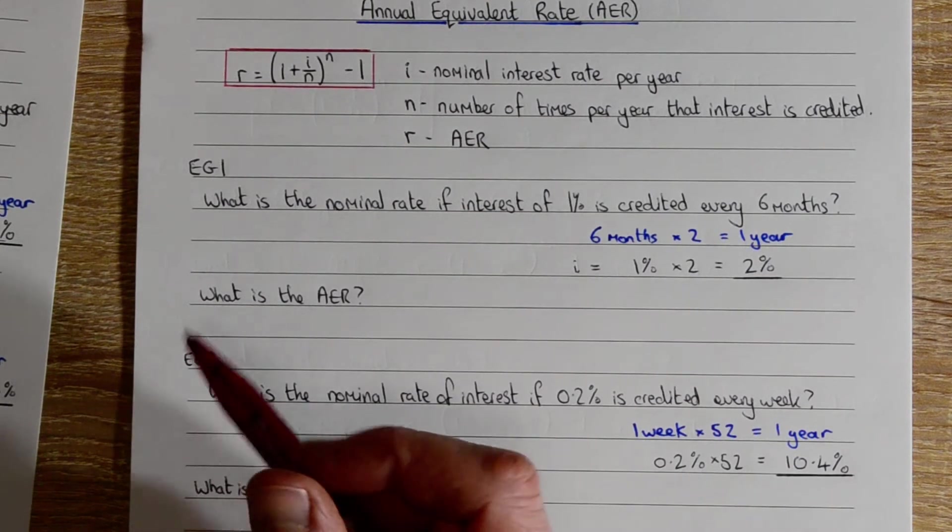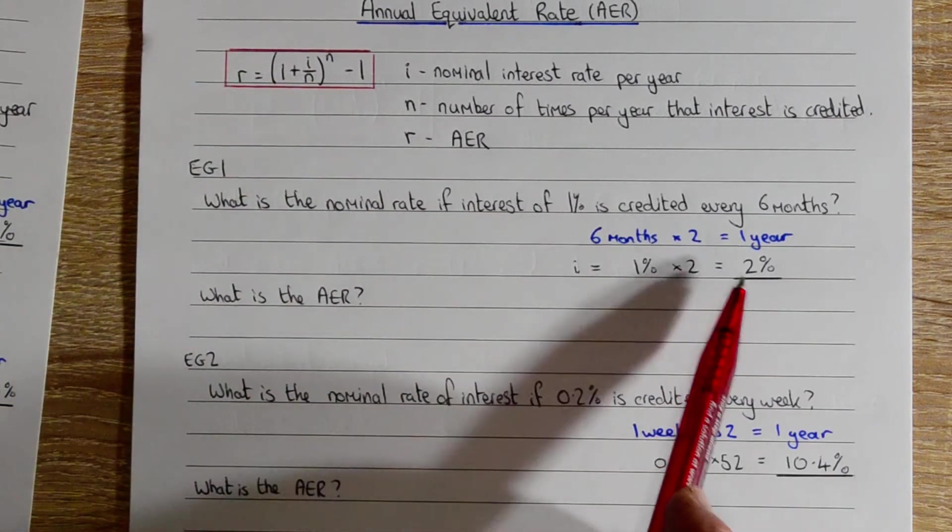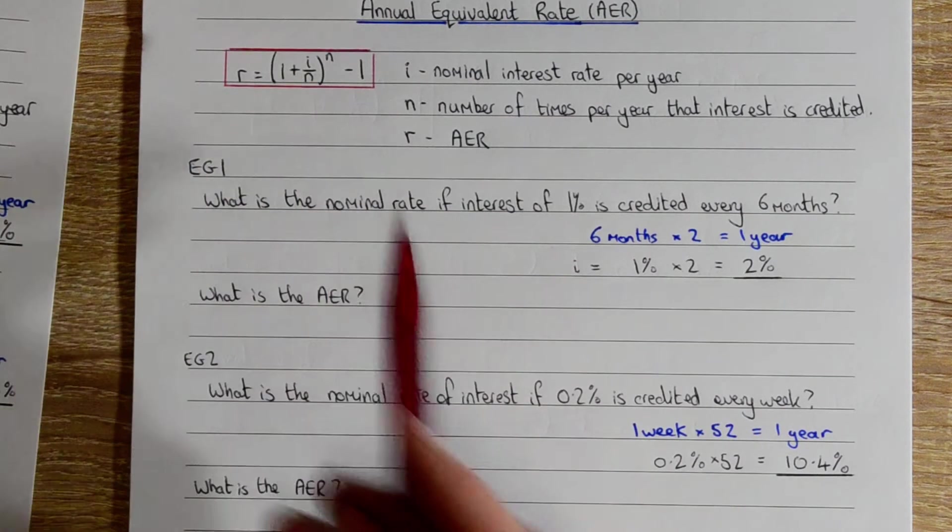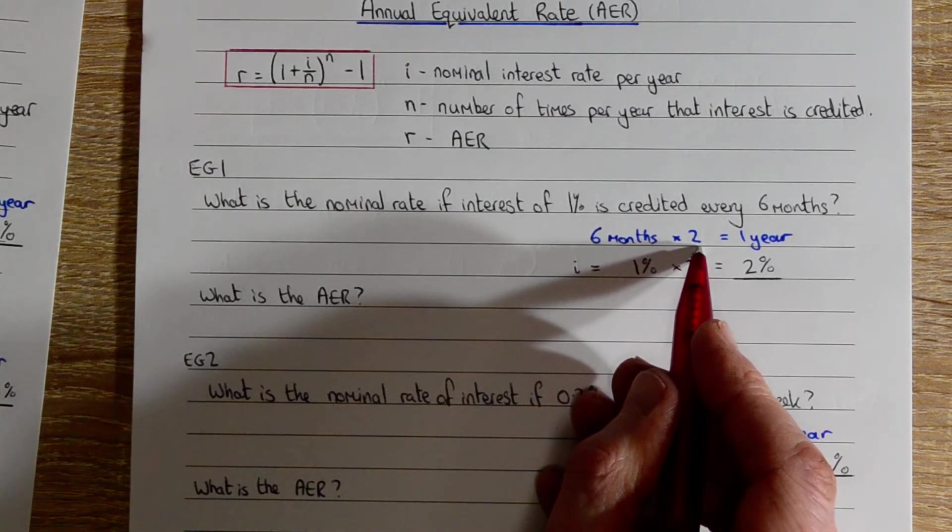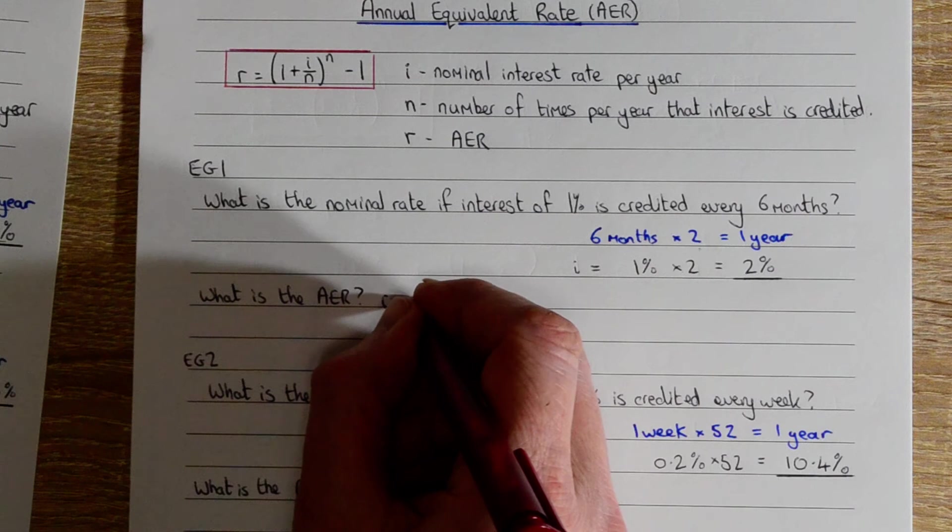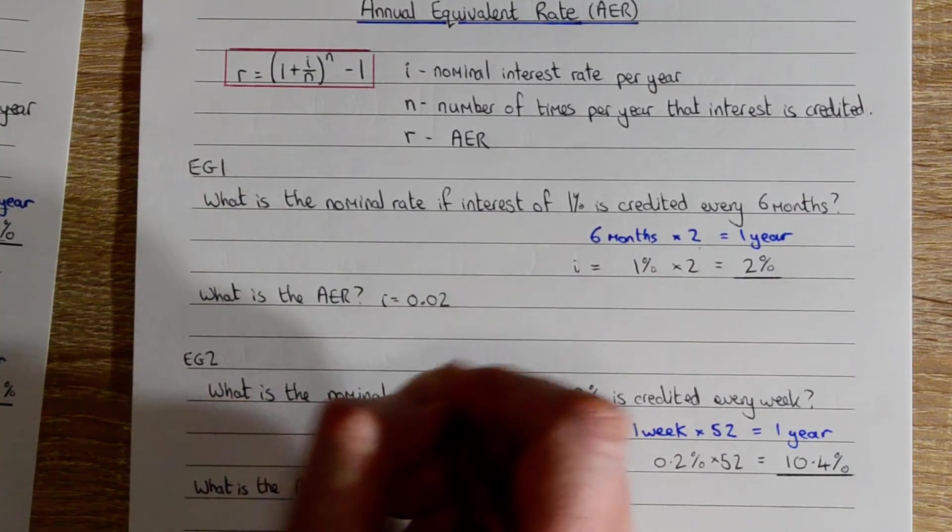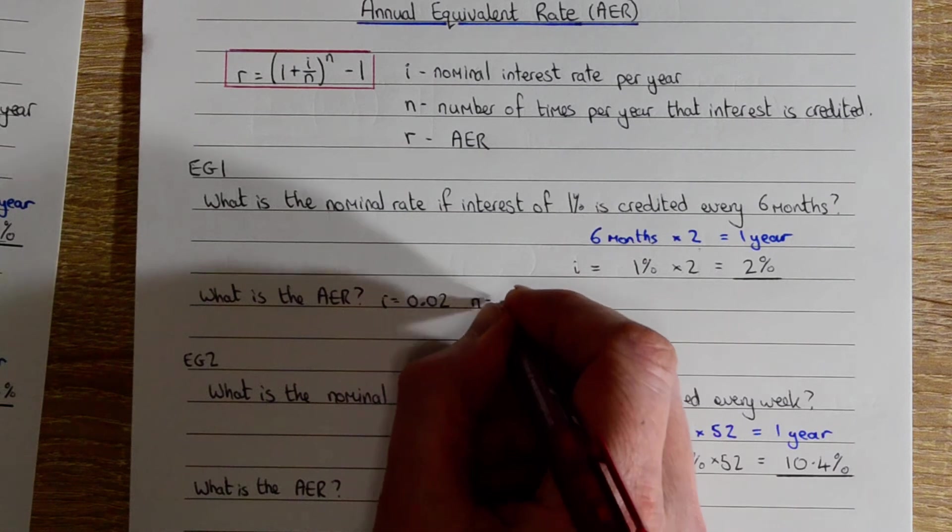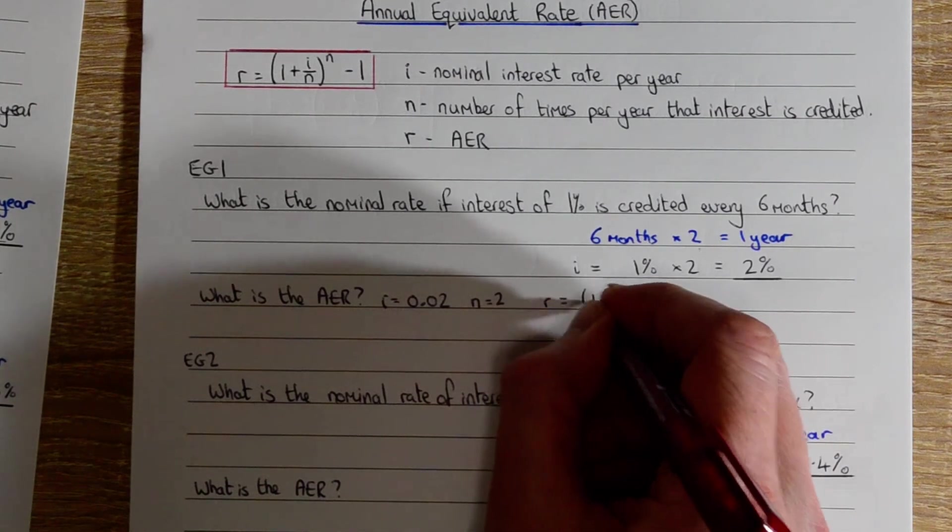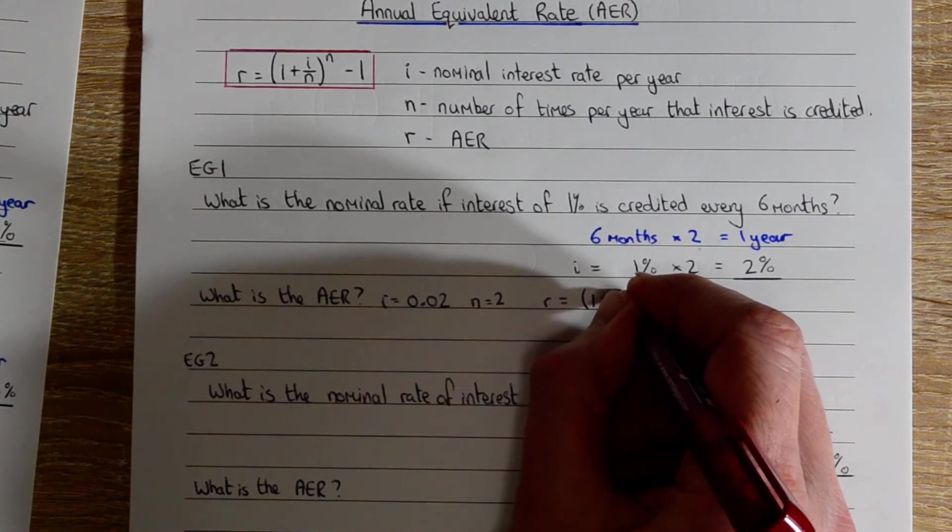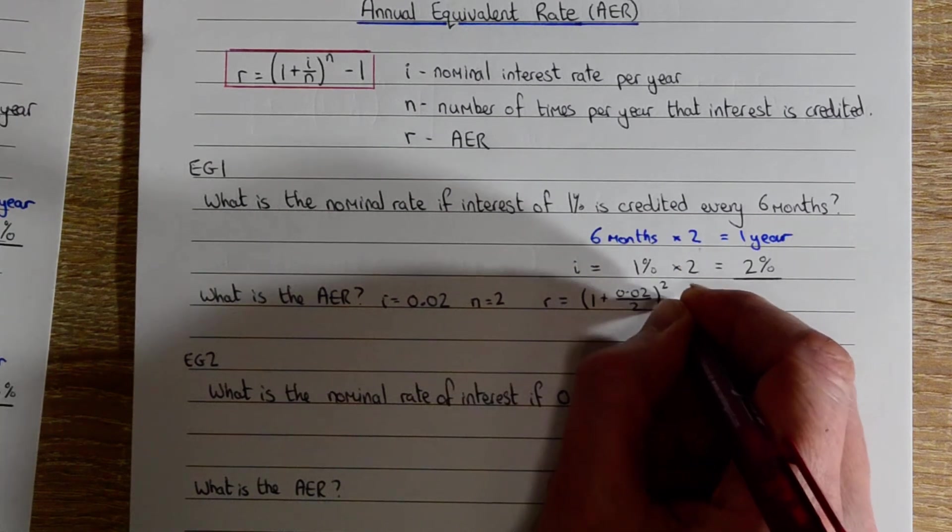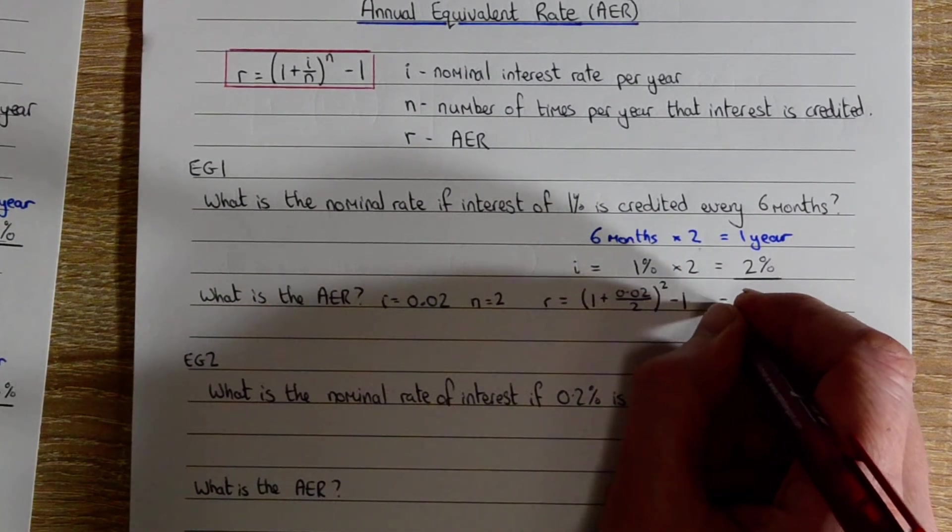To use this formula, we need to know I, which we just worked out. We need to know N, the number of times per year interest is credited, and that's our value here: 2. So I equals 2%, we need that as a decimal, and N is 2.